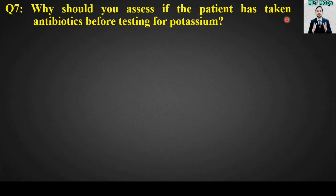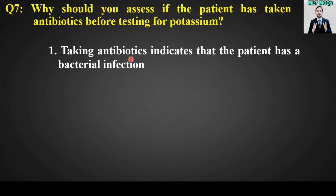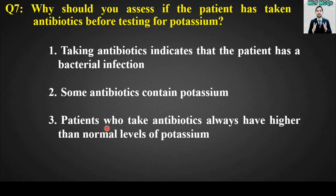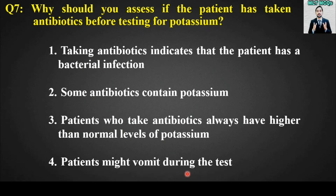MCQ number seven: Why should you assess if the patient has taken antibiotics before testing for potassium? Options are: taking antibiotics indicates the patient has a bacterial infection; some antibiotics contain potassium; patients who take antibiotics always have higher than normal levels of potassium; or patients might vomit during the test. The right answer is option number two — some antibiotics contain potassium.